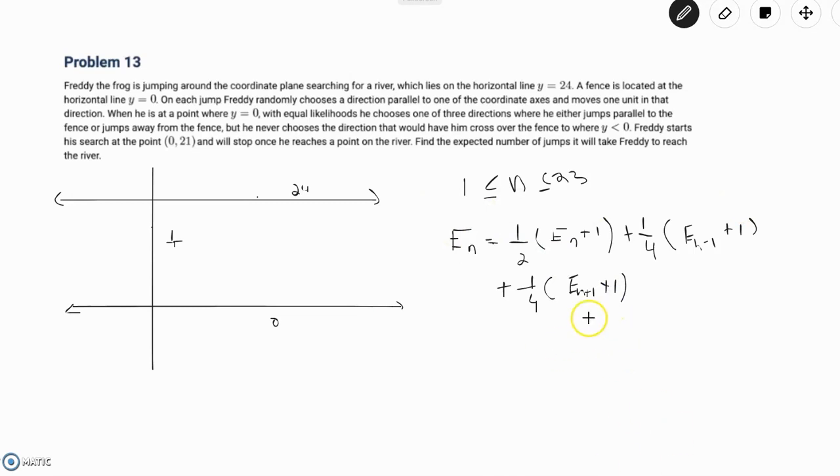And so this holds for all n greater than or equal to 1 and less than or equal to 23. And E(0) is a special case, so we'll just write it out over here. E(0) is equal to, he stays put with probability two-thirds, so it's equal to two-thirds times E(0), plus one. And he moves forward with probability one-third, so it's plus one-third times E(1) plus 1.